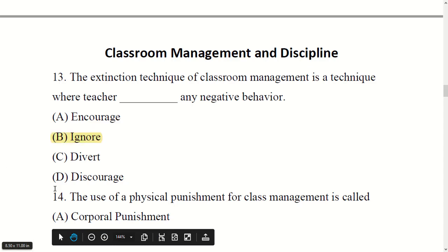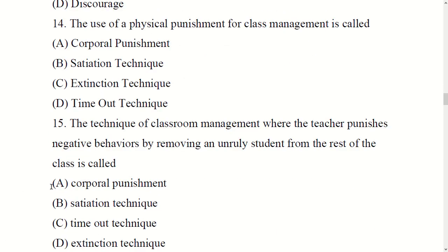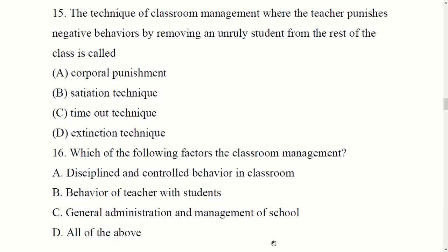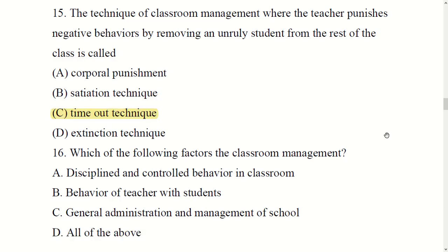In the extinction technique, negative behavior is ignored. The use of physical punishment for classroom management is called corporal punishment — option A. The technique of classroom management where the teacher punishes negative behavior by removing a student from the rest of the class is called the Time-Out Technique — option C.